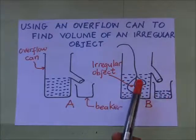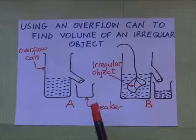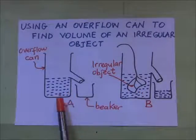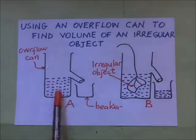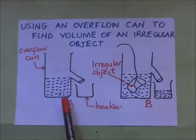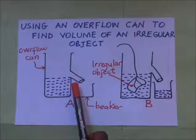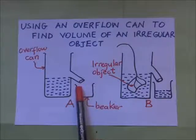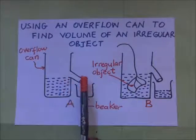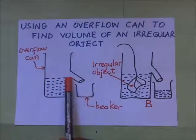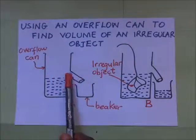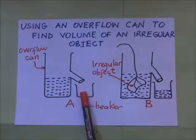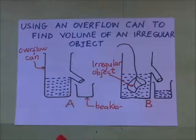How do we find the volume of this irregular object? First of all, as shown in part A, we fill our overflow can up to the level where water just flows out of the overflow can — right to the brim. We also make sure that the beaker is completely empty, with no water in it.